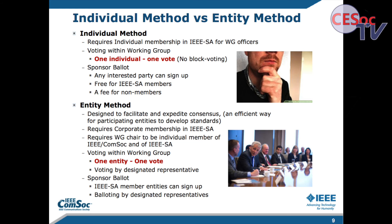One thing that people often concern themselves about is who gets to work in a standards group and how the technology gets adopted. For many industries, the creation of intellectual property — patents, copyright code, and a variety of things — is quite important. Many companies would dearly love to have their intellectual property adopted into a standard. In order to do that, you have to get the intellectual property voted to be adopted by a working group, and there are a couple of different ways that's done in IEEE.